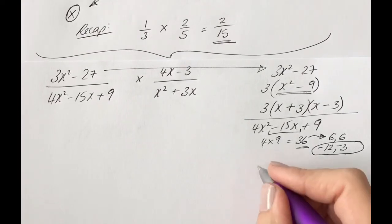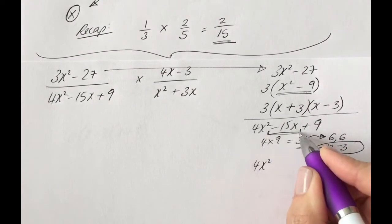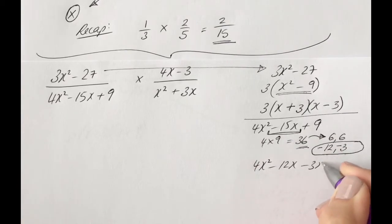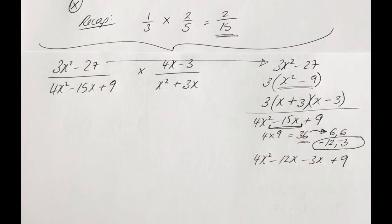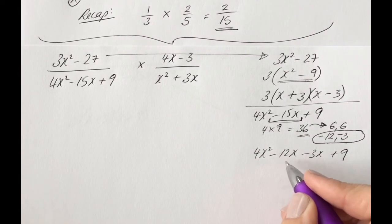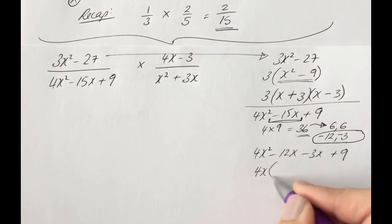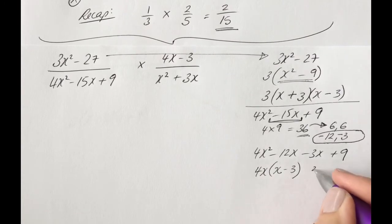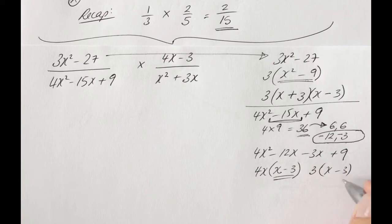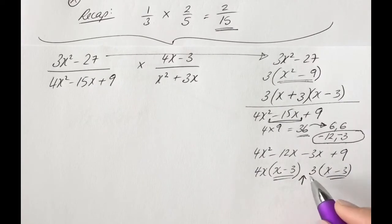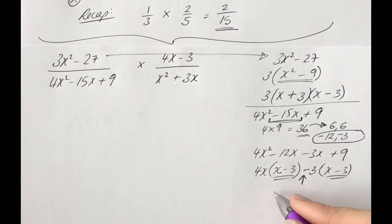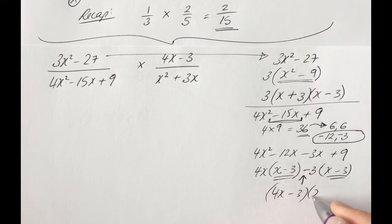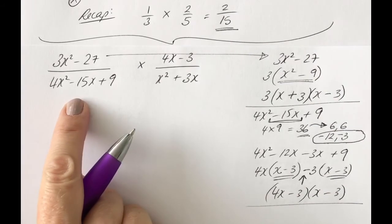We rewrite the quadratic: instead of the middle term minus 15x, we write it as minus 12x minus 3x. So: 4x squared minus 12x minus 3x plus 9. Looking at 4x squared minus 12x, what's common is 4x, giving 4x(x minus 3). Then minus 3x plus 9 has a common factor of minus 3, giving minus 3(x minus 3). So the brackets match, and we get (4x minus 3)(x minus 3).